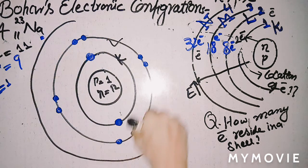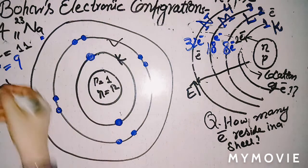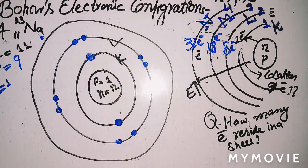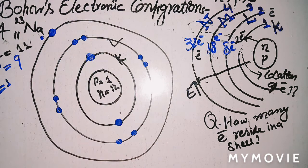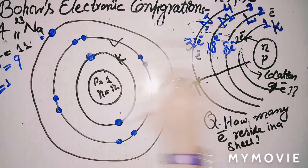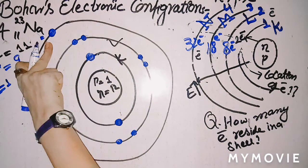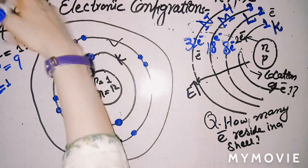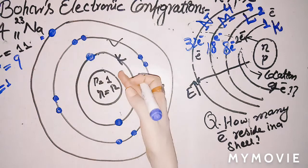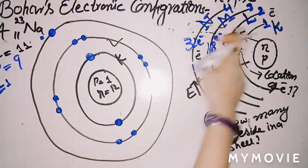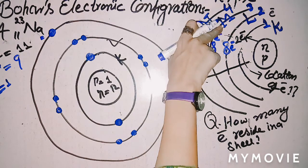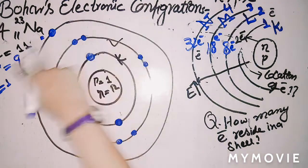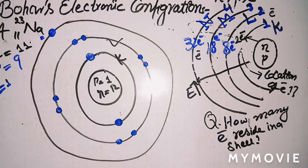For sodium, the remaining electron equal to 1 goes to the M-shell. You have to place 8 electrons in the second shell and 1 electron in the third shell. So the Bohr electronic configuration of sodium is: K=2, L=8, M=1. This is the complete Bohr electronic configuration of sodium.